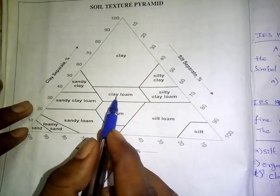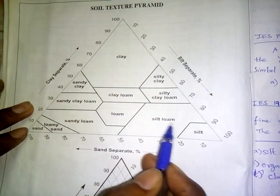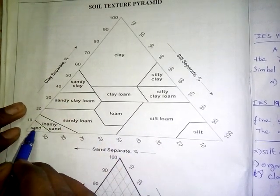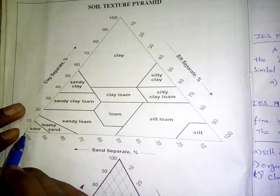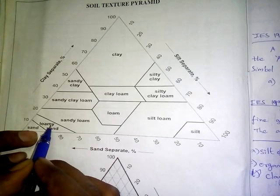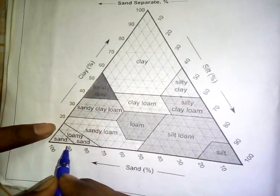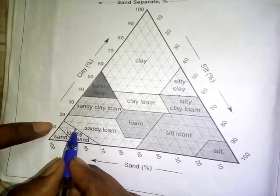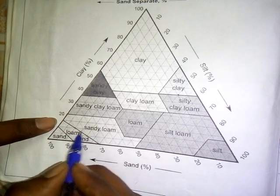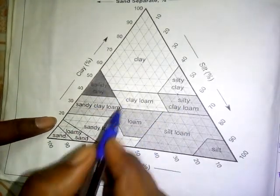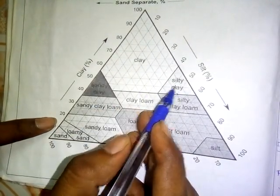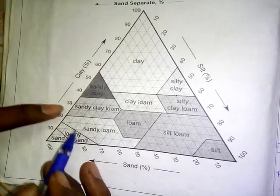Reading the soil texture triangle, the textural classes include: clay loam, silty clay loam, silty loam, sandy loam, sandy clay loam, and loamy sand. For example, with sand at 90% and silt at 90%, clay at 10%, the classification falls under loamy sand on the texture chart.